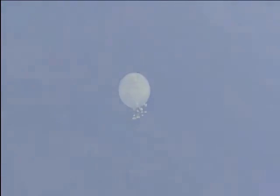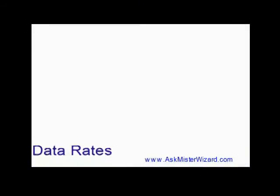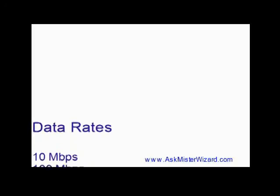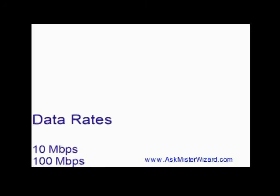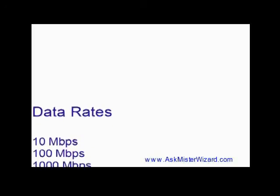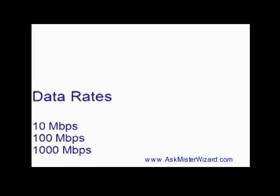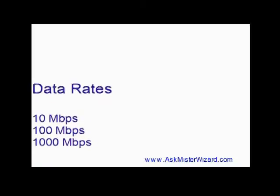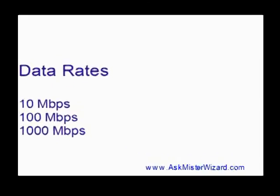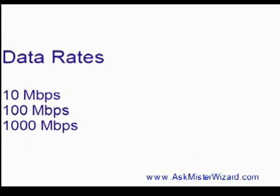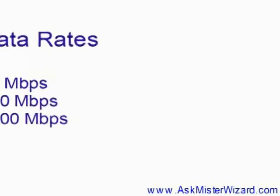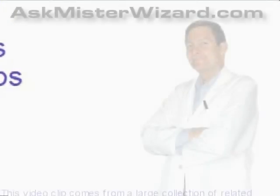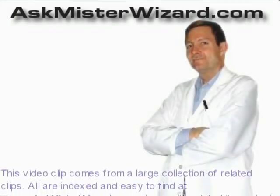Ethernet data rates. Old-style Ethernet transmitted 10 million bits per second. Later on, more modern versions were built with an accelerated speed of 100 million bits per second. Still later, designers learned how to send billions of bits per second and created what is now called Gigabit Ethernet.